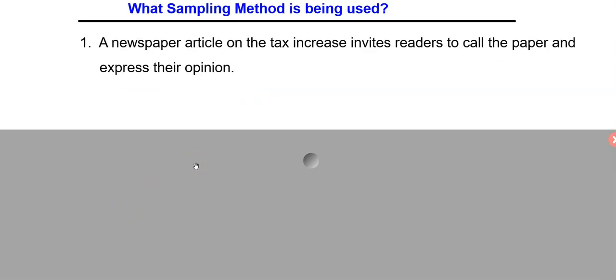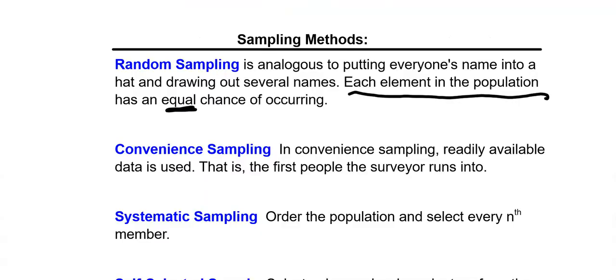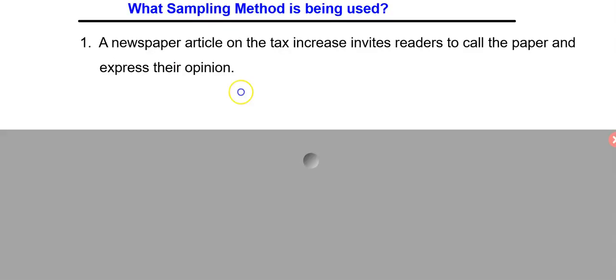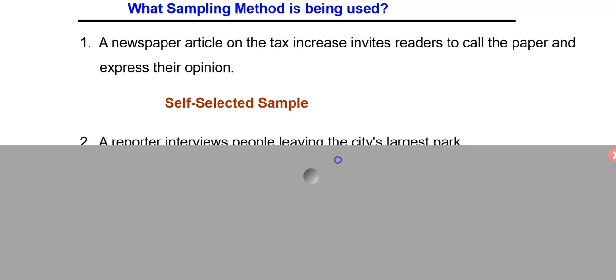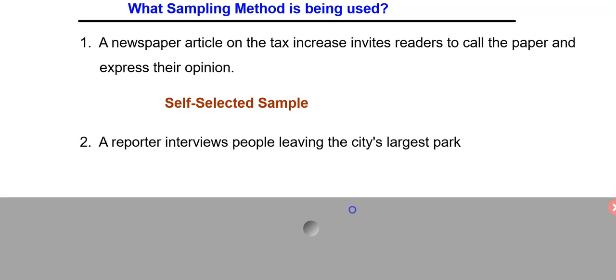So let's look at some examples and maybe we can kind of figure out which sampling method is being used in each case. A newspaper article on a tax increase invites readers to call the paper and express their opinion. They say, hey, call us up and if you want to do this, well, this looks like a self-selected sample. You're basically volunteering to be a part of this study. So that's a self-selected sample, not a very good way of doing things.